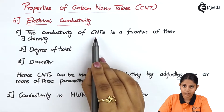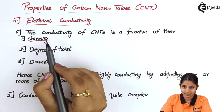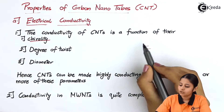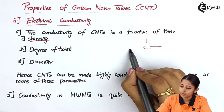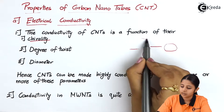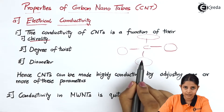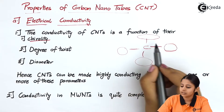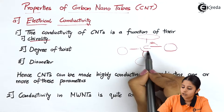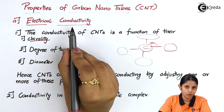The conductivity of carbon nanotubes is a function of their chirality. Now what exactly is chirality? Every carbon has four bonds attached to it, and each bond will be attached to a different substance. This is known as chirality. Chiral carbons are generally denoted by an asterisk. Because of this chirality present in the carbon, there is electrical conductivity.